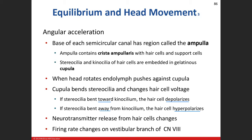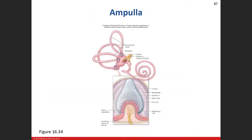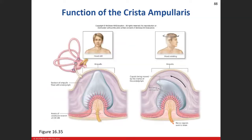As the endolymph smacks the cupula and moves it, the stereocilia and kinocilium bend. If the stereocilia bend toward the kinocilium, we get depolarization; if they bend away, we get hyperpolarization. This influences neurotransmitter release and the firing rate — the same concept as with the macula. As the person starts to turn their head, the inertia moves the endolymph, which deflects the cupula to stimulate the hair cells.